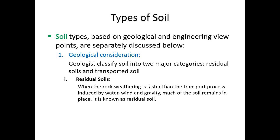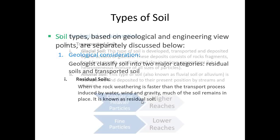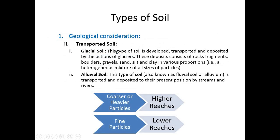Soil, from the geological point of view, is basically of two types: residual soil and transported soil. Residual soil is formed when the rock weathers faster than it is eroded by water and wind. Transported soil is soil that has been transported by various agents such as glaciers, rivers, and wind.